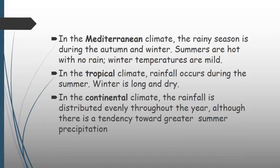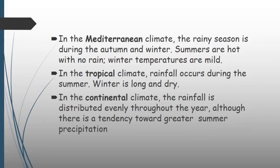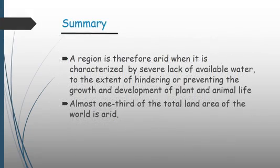In the Mediterranean climate, the rainy season is during the autumn and winter. Summers are hot with no rain, and winter temperatures are also very mild. In the tropical climate, rainfall occurs during the summer and winter is usually long and dry. Lastly, in the continental climate, rainfall is distributed evenly throughout the year, although there is a tendency towards greater summer rainfall.